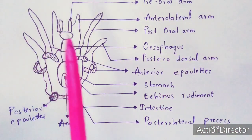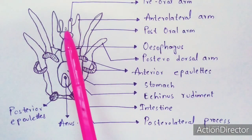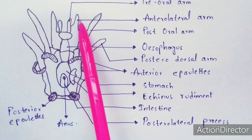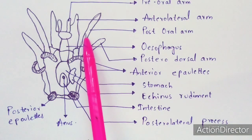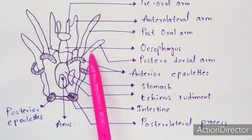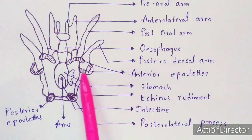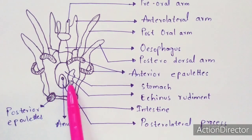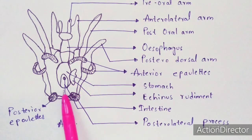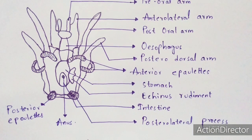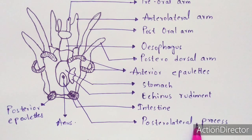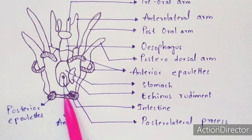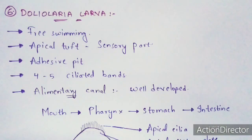In the echinopluteus diagram, these are the pre-oral arms, this is the anterior lateral arm, this is the post-oral arm, this is the esophagus, these are the posterior dorsal arms, and these ring structures are the anterior epaulettes. This is the stomach, this is the echinus rudiment, this is the intestine, here is the posterior lateral process also called posterior epaulettes, and this is the anus from which waste material is excreted.